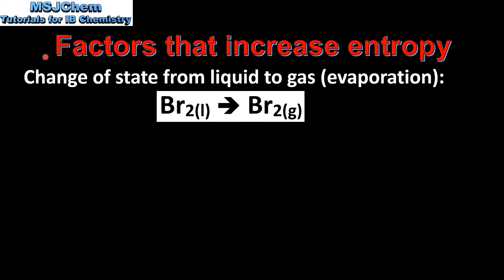Next we look at some more factors that increase entropy. The first example is a change of state from liquid to gas, which is evaporation. Here we have bromine as a liquid evaporating to form bromine as a gas. Because gases have higher entropy than liquids, we have an increase in entropy.